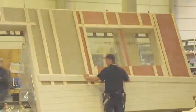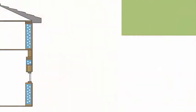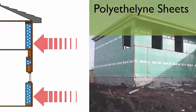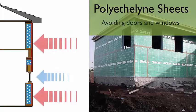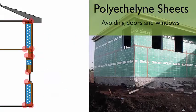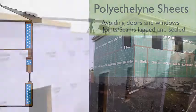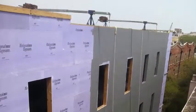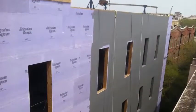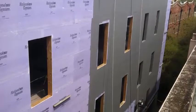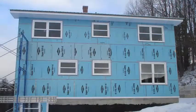In the PAVB approach, large sheets of polyethylene cover the inner surface of the exterior shell of the building, except over doors and windows. At joints and seams, the poly is carefully lapped and sealed. Polyethylene sheets function as both the air barrier and the moisture diffusion retarder. Using the same material to serve two functions is supposed to save costs.